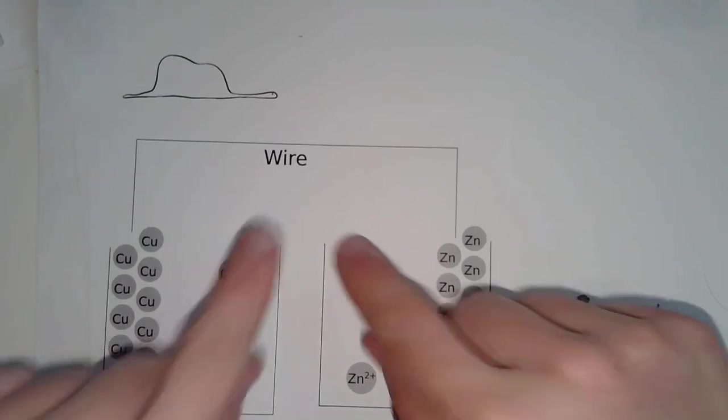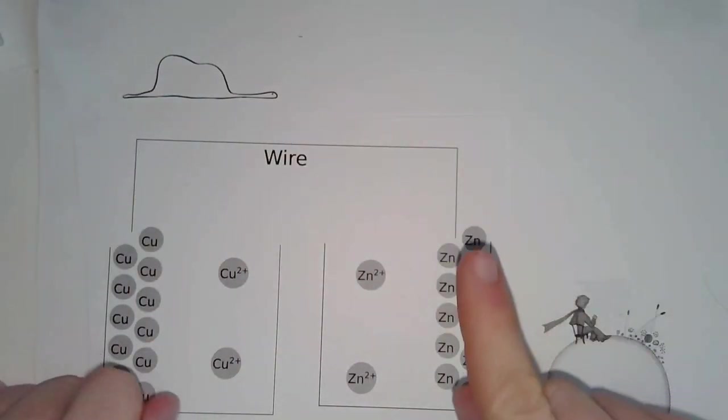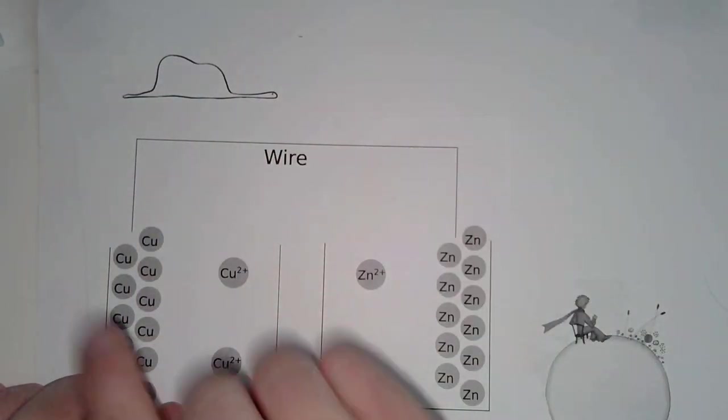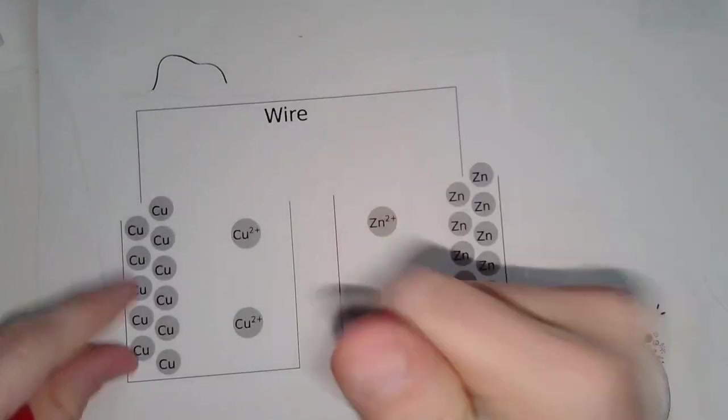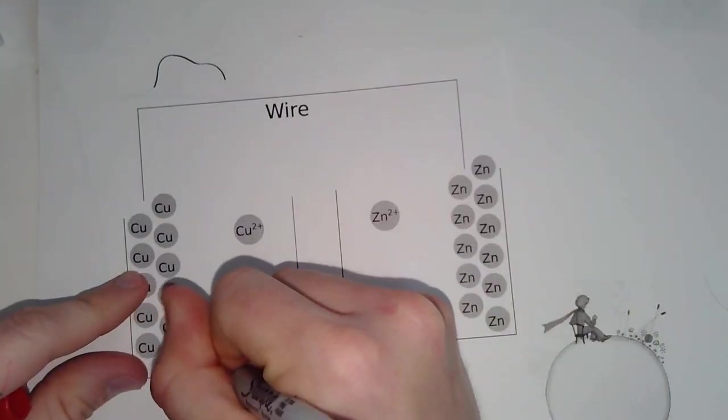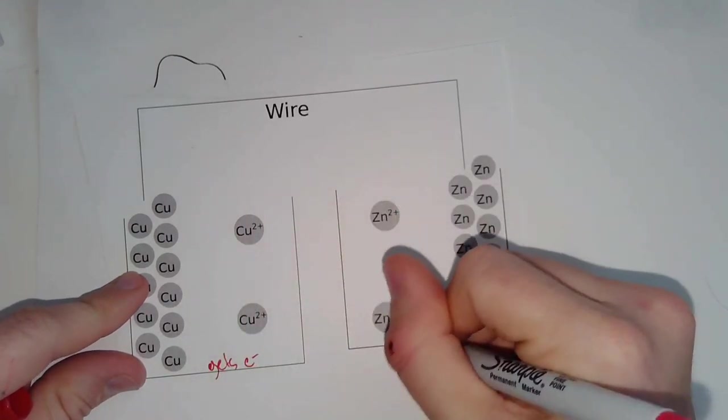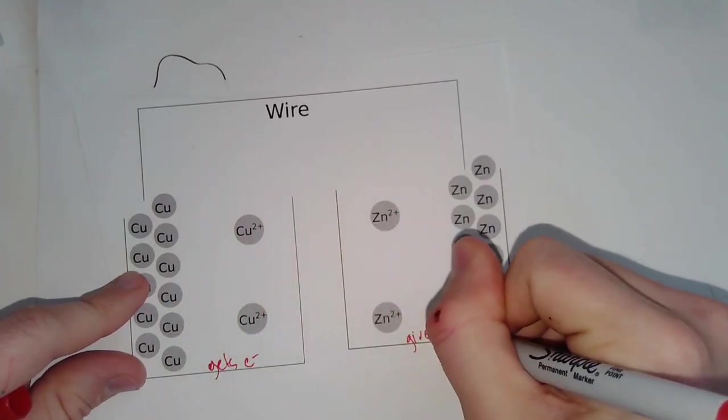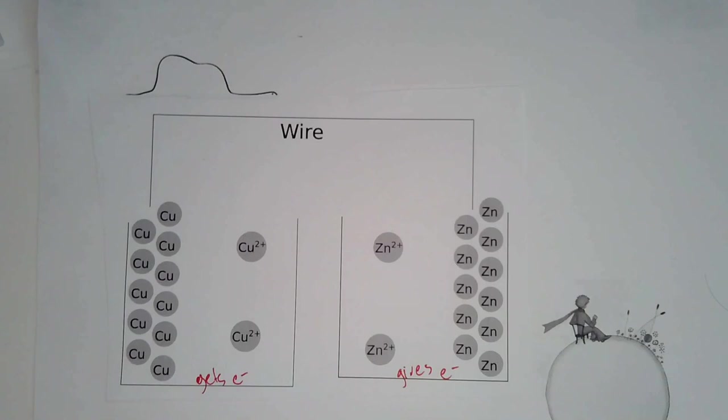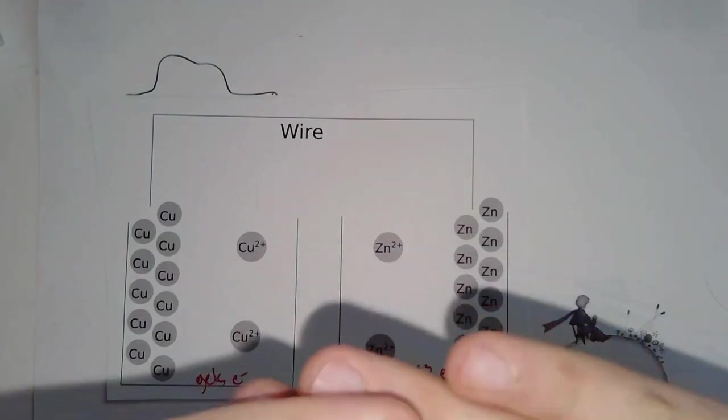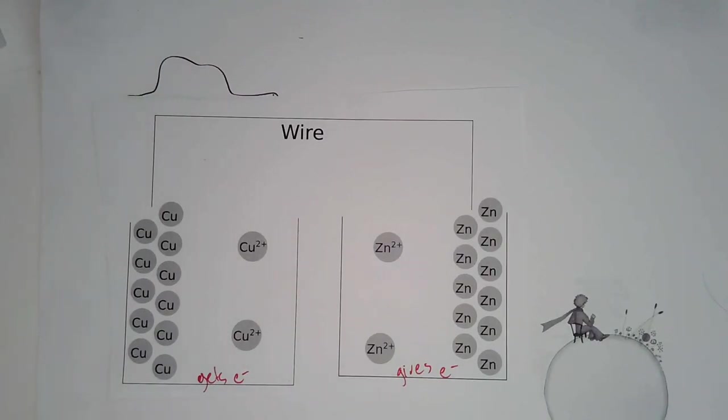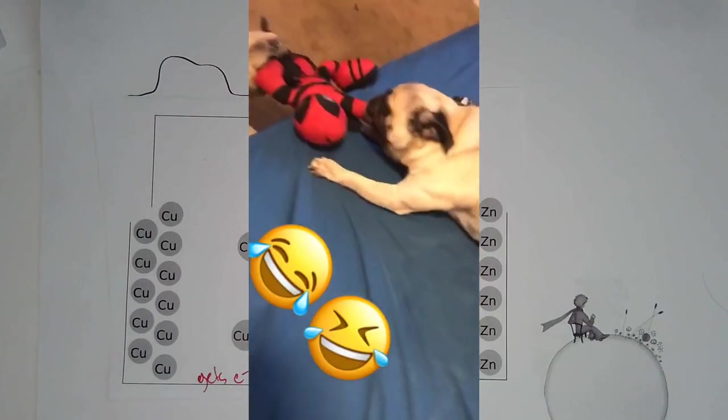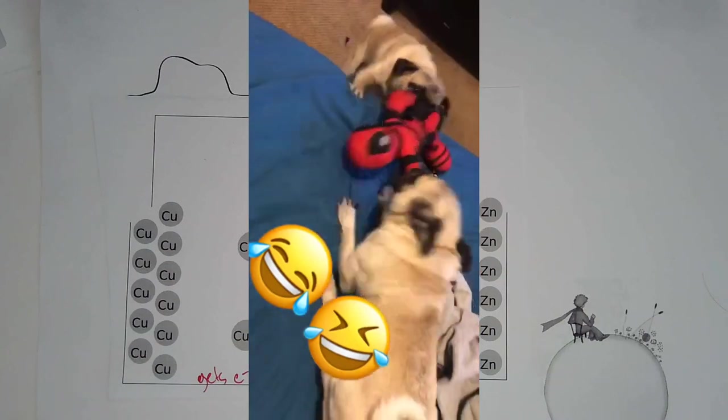So both want electrons. And that can't happen because then what would happen is we'd be pulling out and there wouldn't be any electricity. Electricity is the flow of electrons in a certain direction. So in this case, copper will win. Copper gets electrons. And that means zinc has to give electrons. And you might be like, how did you know that? Well, I looked at a chart. Think of it kind of like a teeter totter or a tug of war.